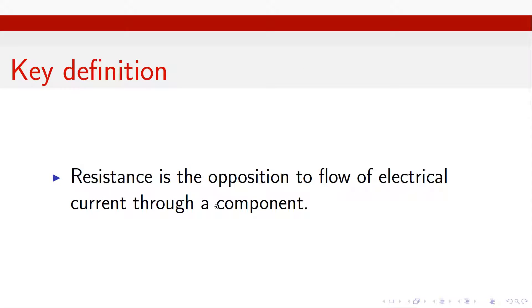So to start off by defining resistance, resistance is the opposition to flow of electrical current through a component. So if we've got an electrical component in a circuit and we have current flowing through this circuit, then the resistance of that component is how much it opposes the flowing of that current through it.